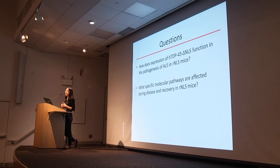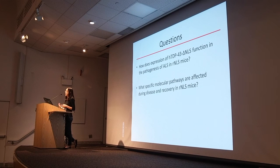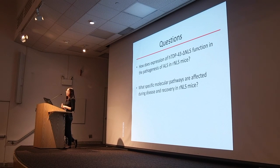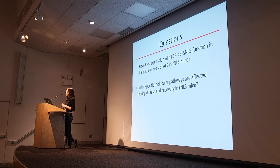Because no truly effective therapy for ALS currently exists, we are really excited about this mouse model because the mice can functionally recover even with such motor deficit. And so this brings us to two main questions: first, we want to understand how exactly expression of the transgene functions in the pathogenesis of ALS in these mice; and second, we want to understand the molecular changes that underlie disease and recovery — what specific molecular pathways are affected in our mice.